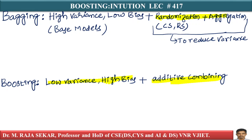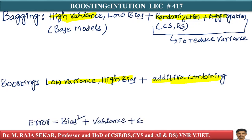In bagging we had high variance and tried to reduce it while keeping bias low. In boosting the situation is different. Your generalization error equals a bias term plus a variance term plus irreducible error.